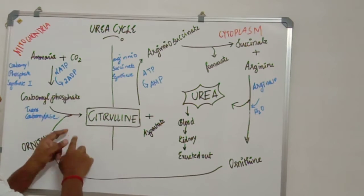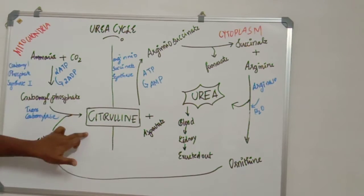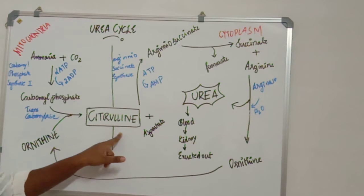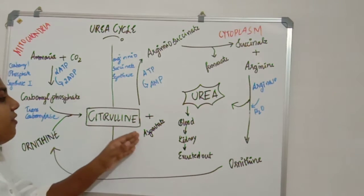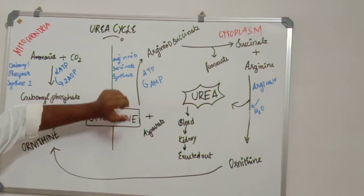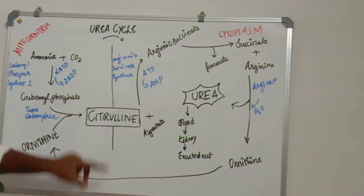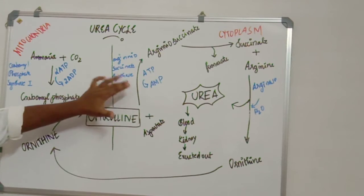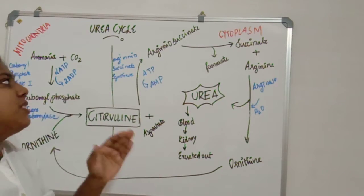This citrulline enters the cytoplasm. Actually, the citrulline is formed in mitochondria. This citrulline passes to cytoplasm and it gets combined with aspartate. In the combined aspartate also occurs the conversion of ATP to AMP. And this reaction is carried out by argininosuccinate synthetase and it is actually the formation of argininosuccinate.